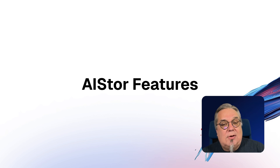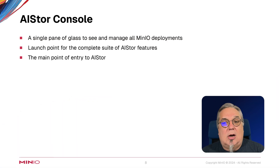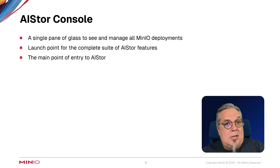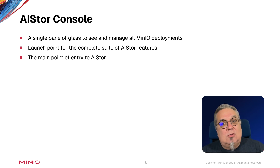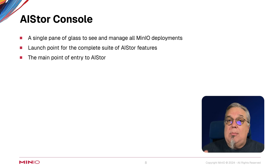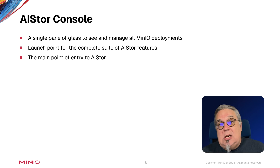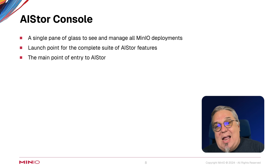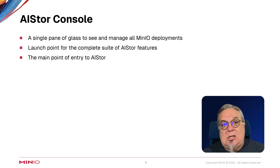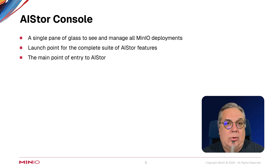Let's talk about some of the features of AI Store that you might want to use in your environment. First off is the AI Store console. This is the centerpiece of what we're going to be showing you here in this module. It's a single pane of glass to see and manage all of your MinIO deployments and all of the additional features. It also acts as the launch point for the complete suite of all the AI Store features, and it's the main point of entry into AI Store itself. So when you first log into AI Store, what you're going to see is that console interface.